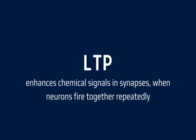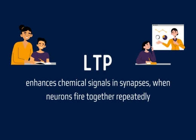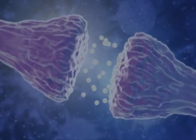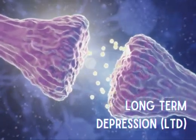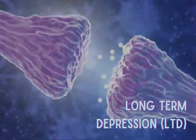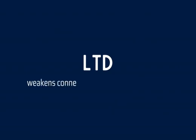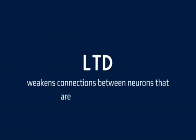As such, LTP forms the basis for learning and even helps in memory formation. The second form of synaptic plasticity is called long-term depression, or LTD. In contrast to long-term potentiation, LTD weakens synaptic connections between neurons that are not frequently used.